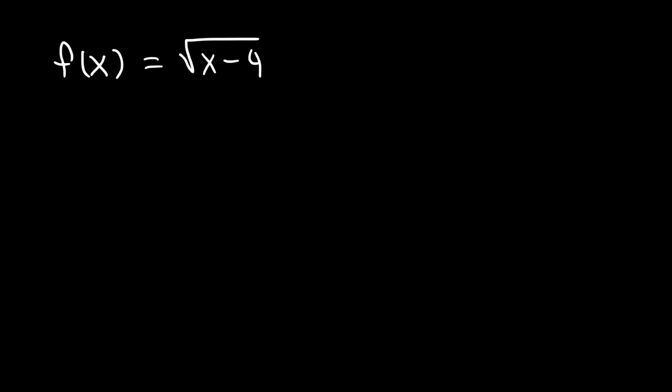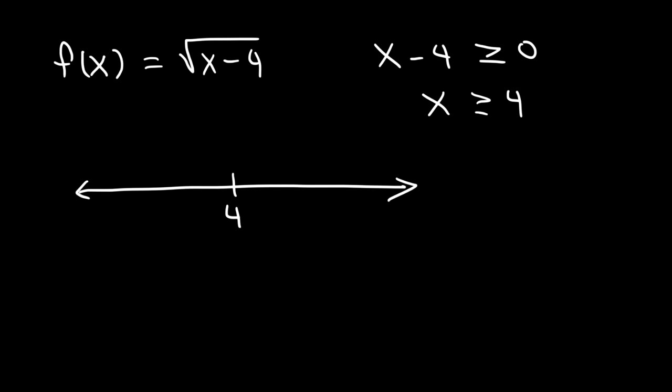Now what if you encounter a square root problem? What is the domain of the square root of x minus 4? For square roots or any radical where the index number is even, you cannot have a negative number on the inside. If it's odd, it could be anything — all real numbers. But for even radicals, you have to set the inside greater than or equal to 0. So for this one, all we need to do is add 4 to both sides — x is equal to or greater than 4. On a number line we'll have a closed circle at 4 and shade to the right. So the domain is from 4 to infinity, using a bracket since it includes 4.